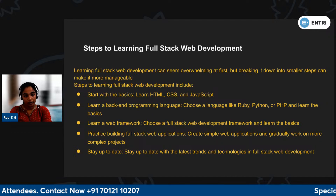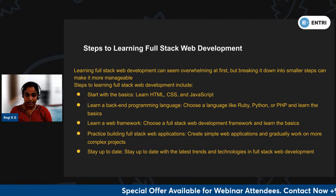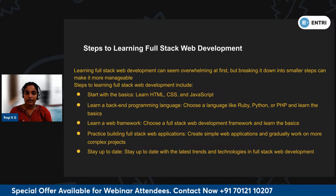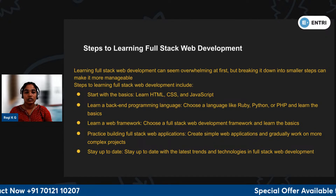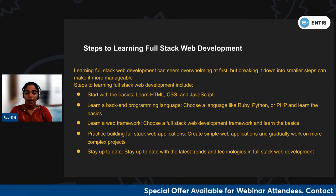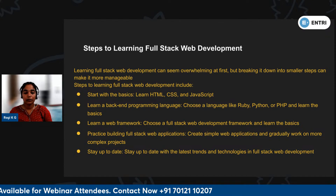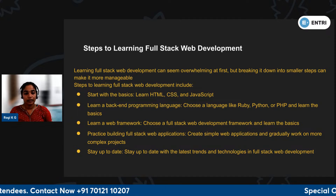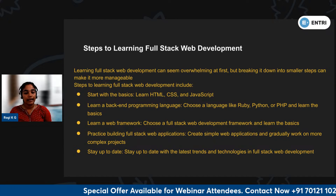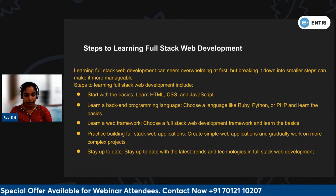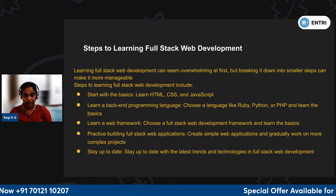The next step is how to become a full-stack web developer. We start with basic HTML, CSS, and JavaScript. Then we start with a back-end programming language — Python, Ruby, PHP, or Java. When we learn a back-end language, we start with some frameworks. For example, Python with Django, or PHP with Laravel.